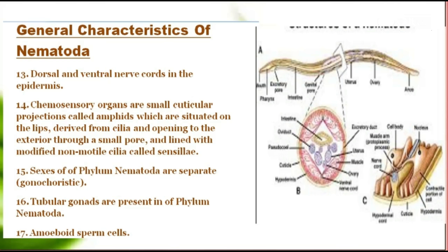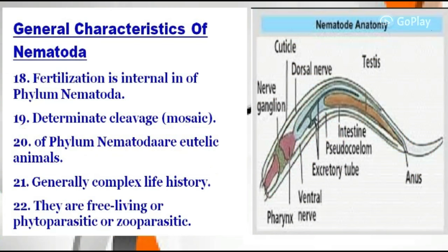There are dorsal and ventral nerve cords in the epidermis. Chemosensory organs are small cuticular projections called amphids, situated on the lips, derived from cilia, and opening to the exterior through a small pore lined with modified non-motile cilia called sensilia. The sexes of phylum Nematoda are separate. Tubular gonads are present, and amoeboid sperm cells are present. Fertilization is internal, with determinative cleavage and generally a complex life history.